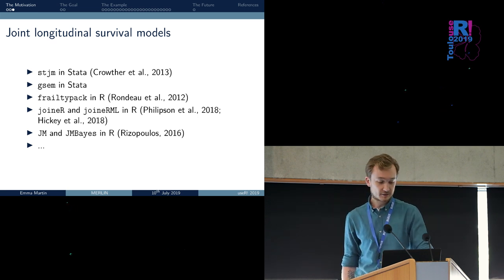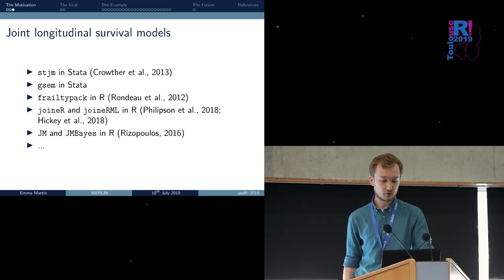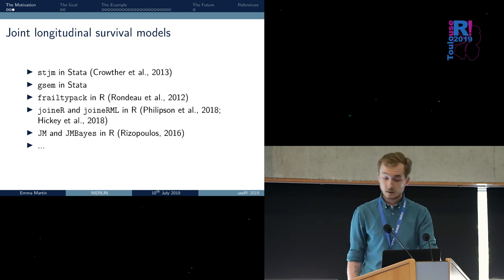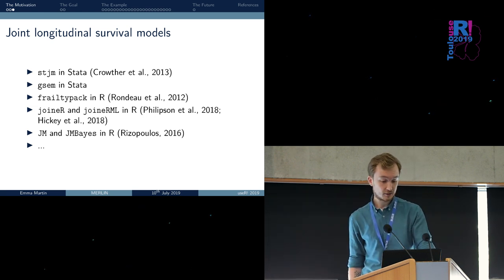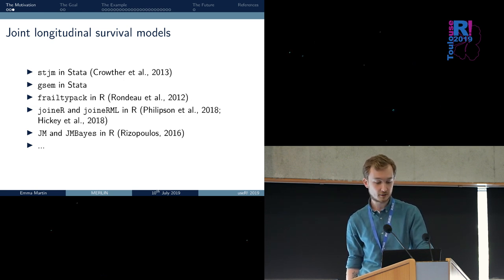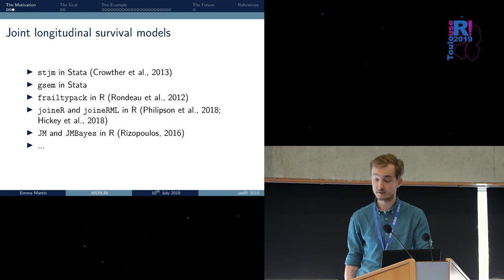There are several packages that can fit joint longitudinal and survival models. For instance, there's STJM and GSM in Stata, there's FrailtyPack in R, there's Joiner and JoinerML, and there's JM and JMBase, among others.